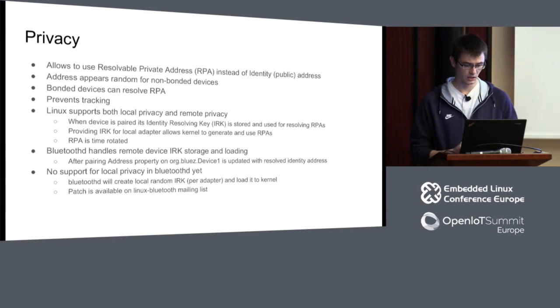Privacy is supported in the kernel but not yet in BluetoothD for local privacy — meaning the Linux box using random addresses. If a remote device uses random addresses, this is handled internally by BluetoothD and your application doesn't need to care. There are patches pending on the mailing list waiting for review that will provide BluetoothD a way to generate and store an identity key and enable privacy mode for your device. Once integrated, all you need to do to enable privacy is set a configuration option in main.conf and restart BluetoothD.